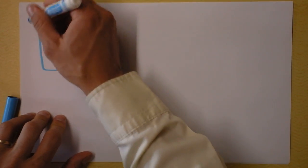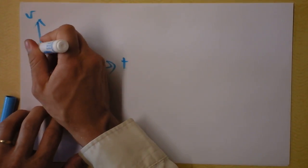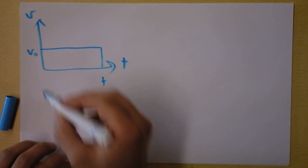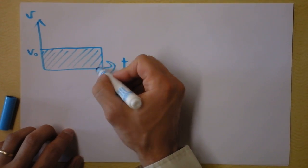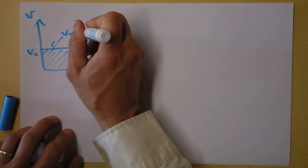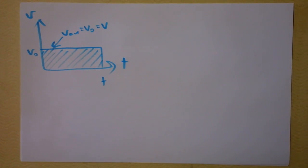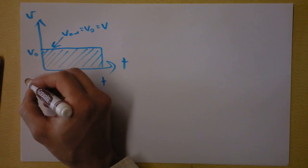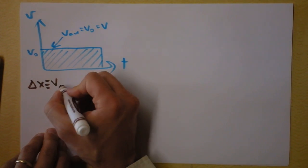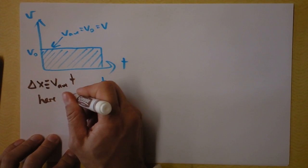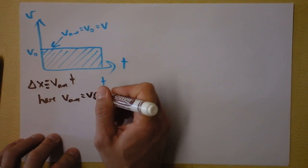Here's my point with the graph. I'll give you a velocity versus time graph. We start out at one velocity and keep that velocity the entire time until time t. That right there is the average velocity. V-average equals V-naught — well, it's also equal to the final velocity. I want to tell you that delta x — how far you've displaced — is your average velocity times how long you've been displacing. And here, the average velocity is the initial velocity.